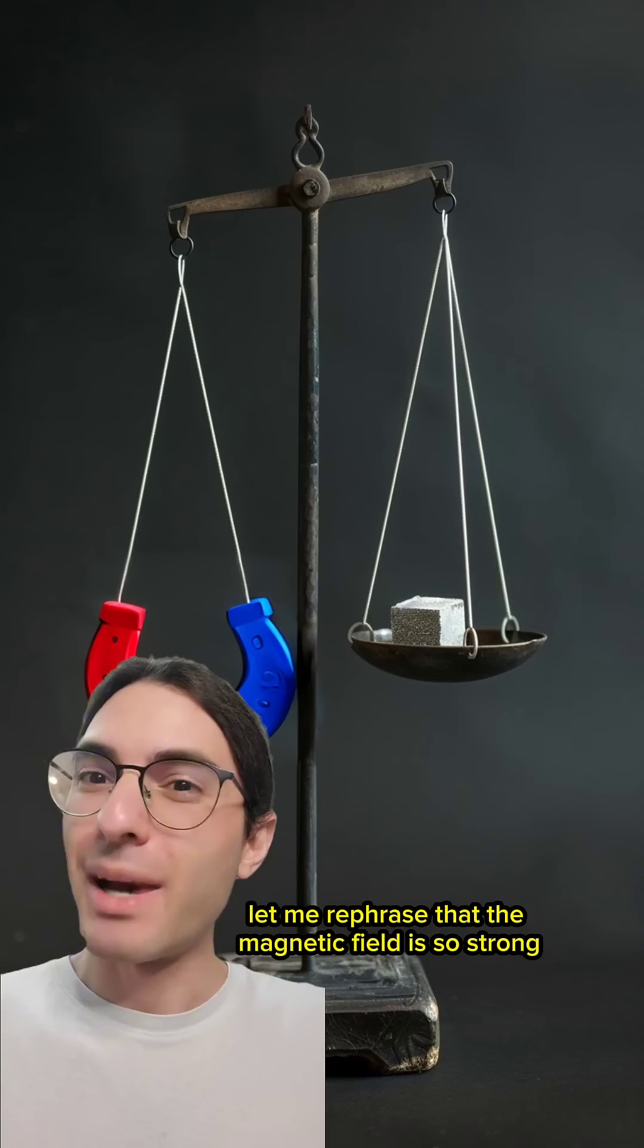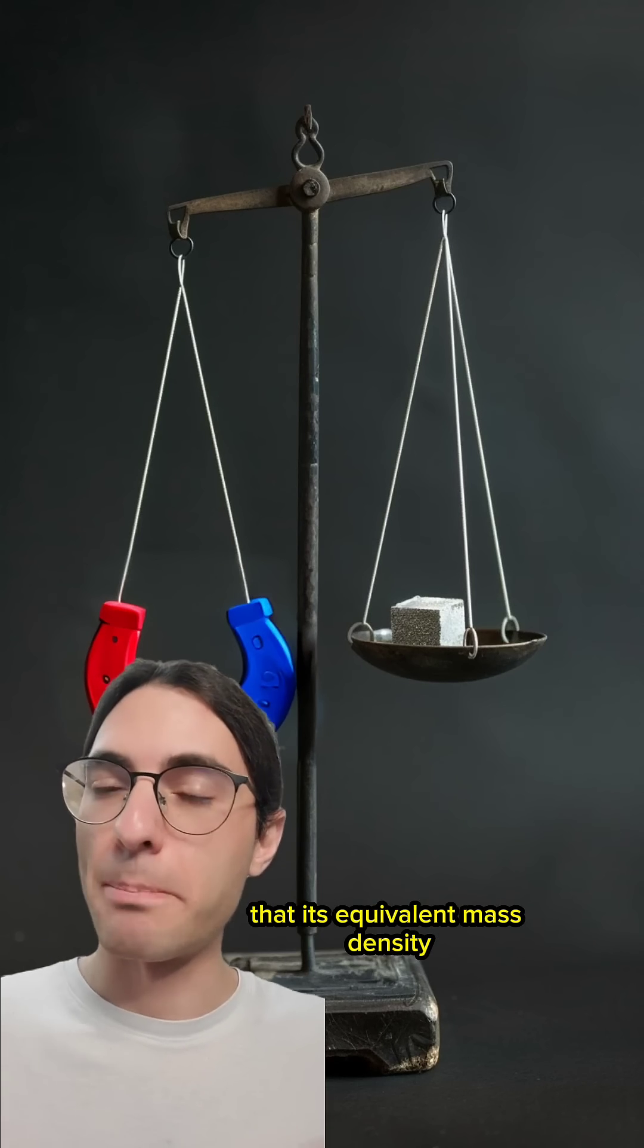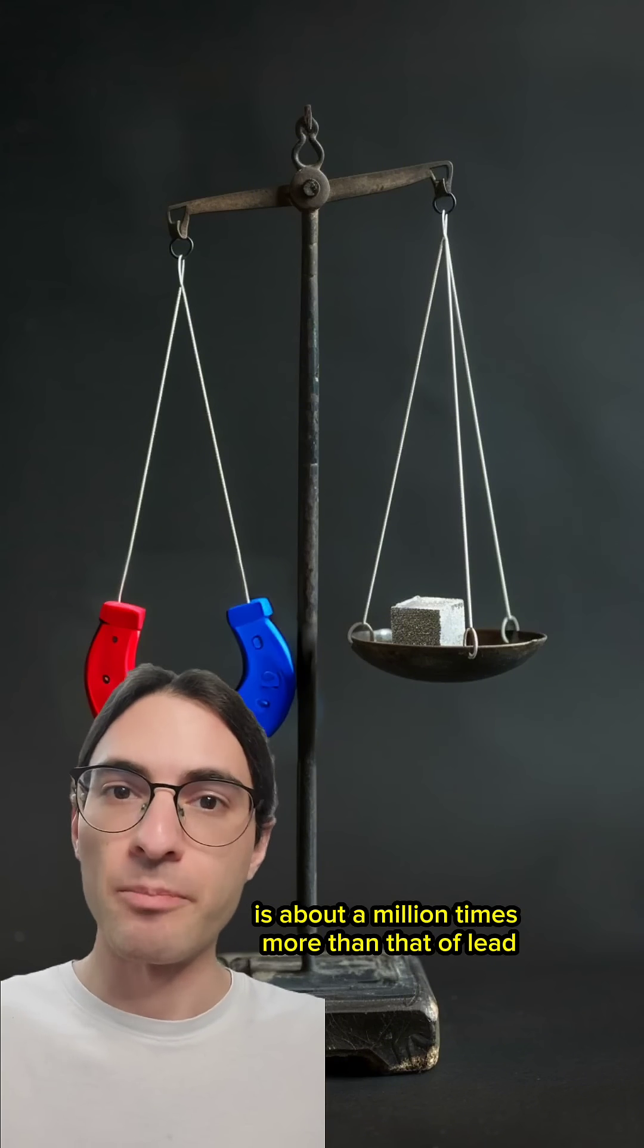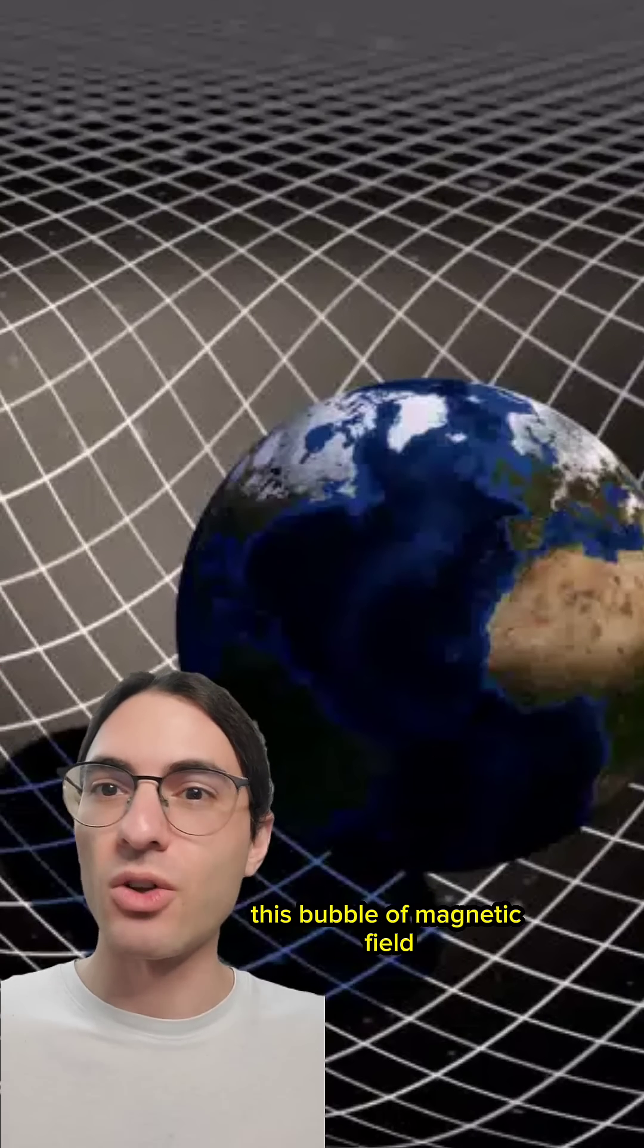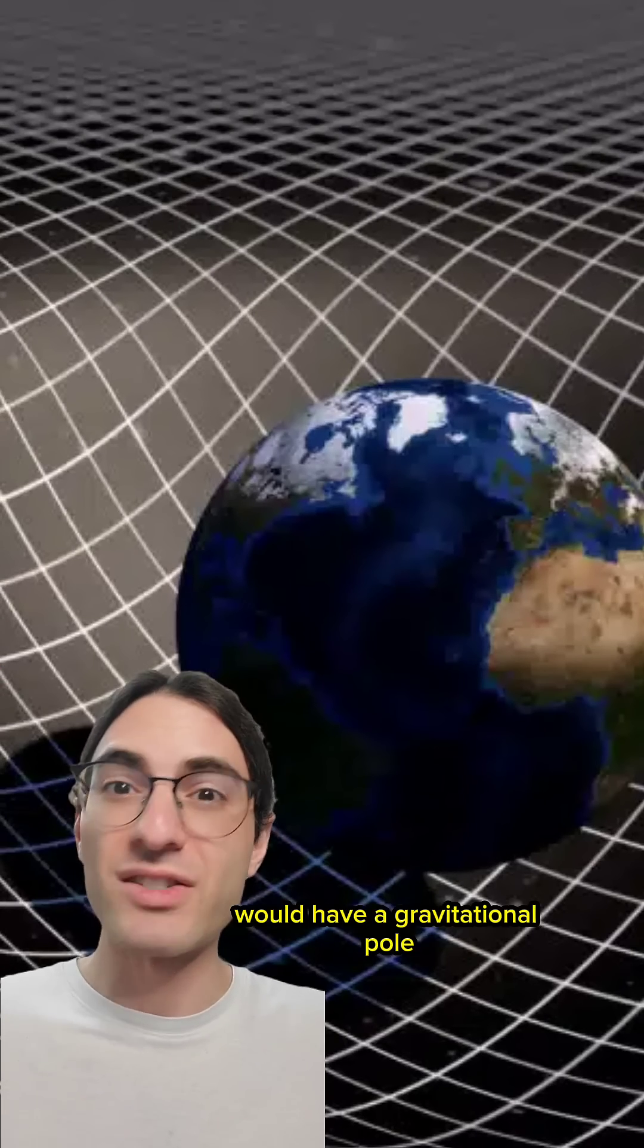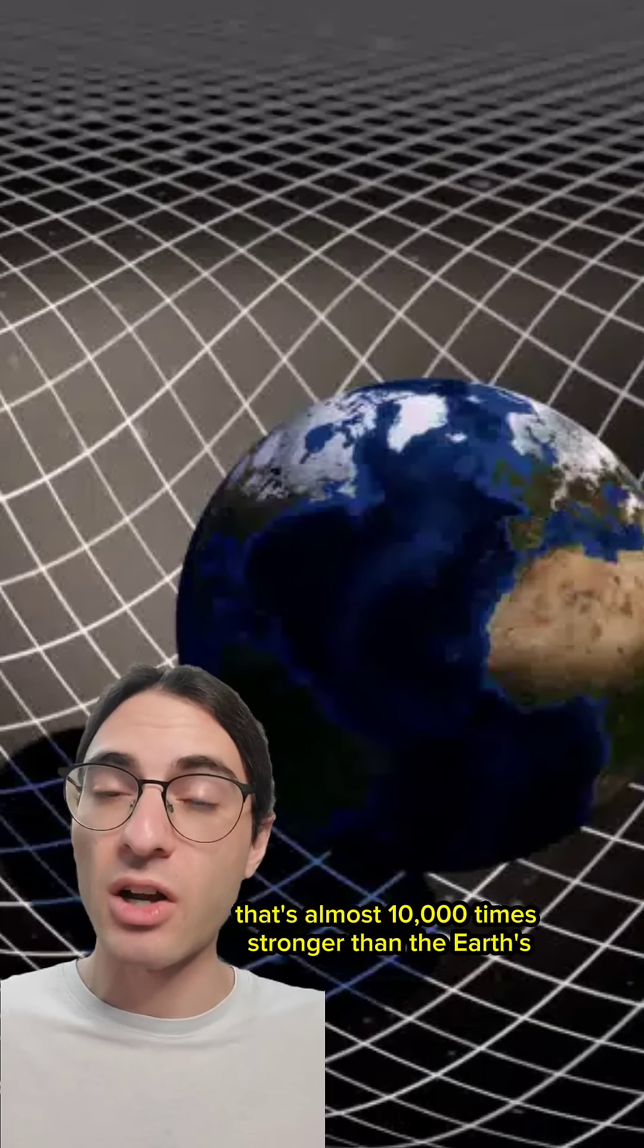Let me rephrase that. The magnetic field is so strong that its equivalent mass density is about a million times more than that of lead. The magnetic field is so strong that, on its own, this bubble of magnetic field that's 21 kilometers across would have a gravitational pull that's almost 10,000 times stronger than the Earth's.